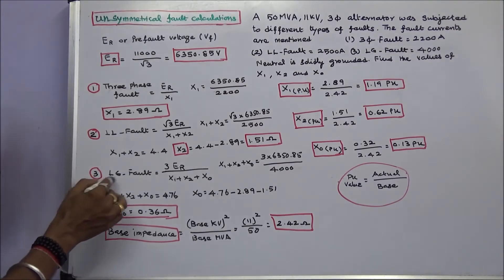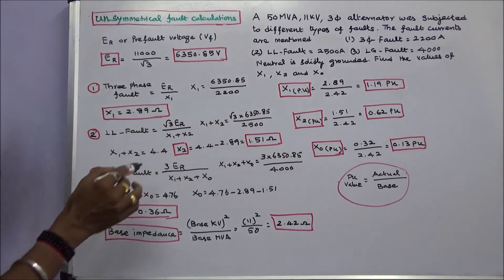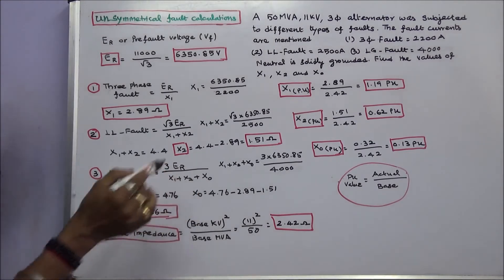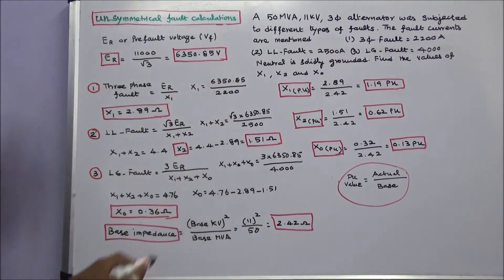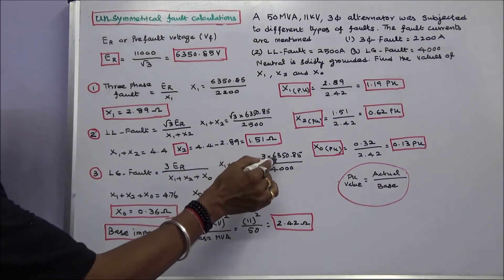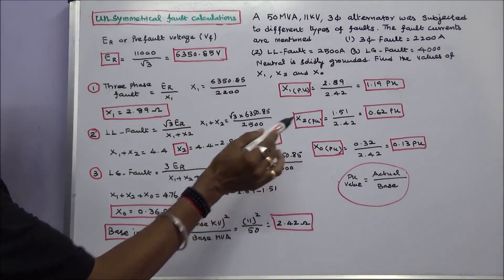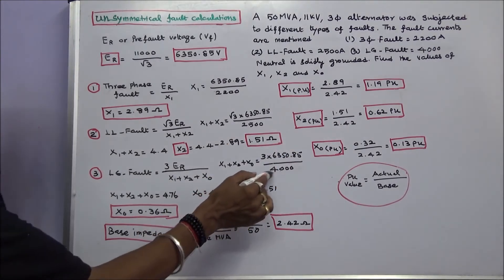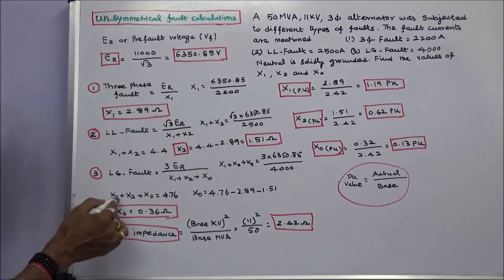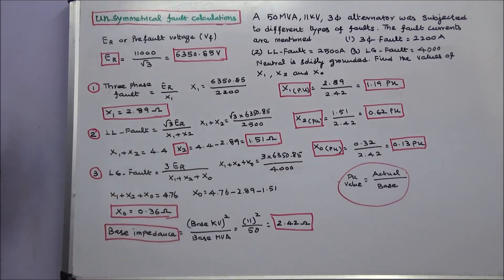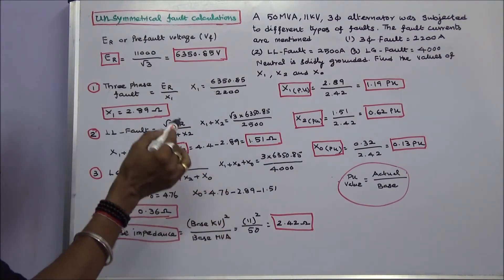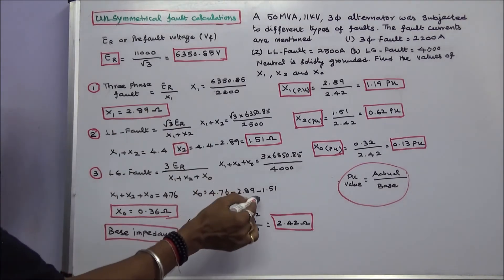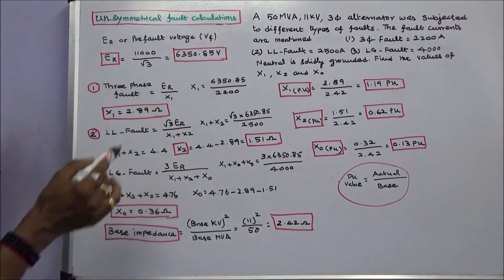The third case is the line-to-ground fault. The formula is 3 multiplied by ER divided by (X1 plus X2 plus X0). The current is given as 4000 amps. Therefore X1 plus X2 plus X0 equals 3 into 6350.85 divided by 4000, which gives 4.76 ohms. Therefore X0 equals 4.76 minus 2.89 minus 1.51, giving X0 equal to 0.36 ohms.